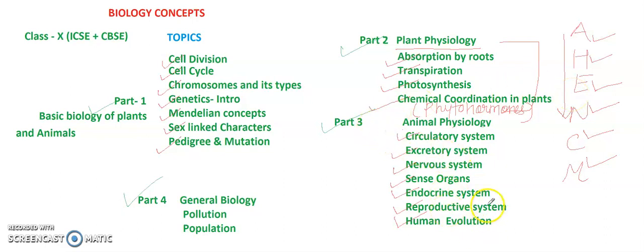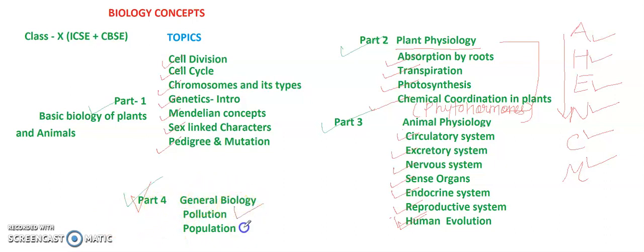In Part 4, we study general biology — topics you have studied in previous classes. This includes pollution and its types, population and its types, causes of population explosion, why there is too much population, and types of growth curves — that is exponential and logistic growth curves. In this way we will cover all the topics.